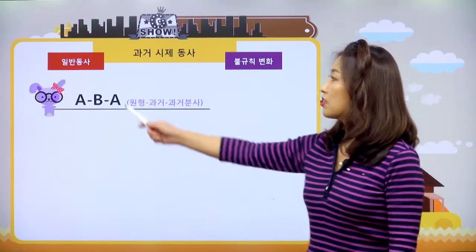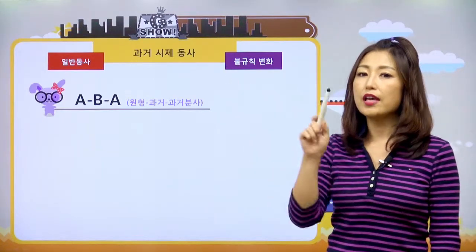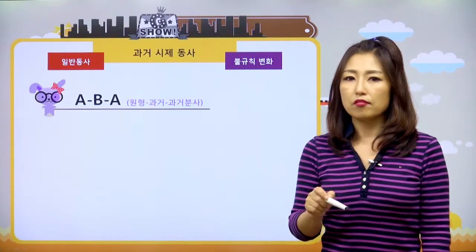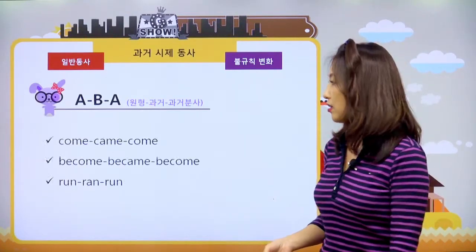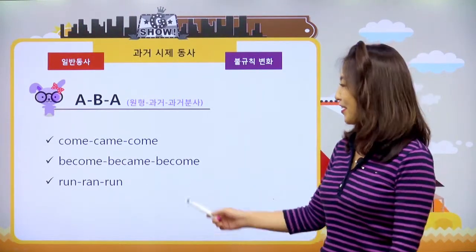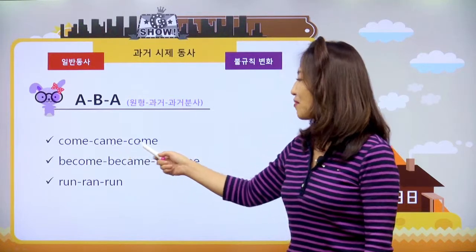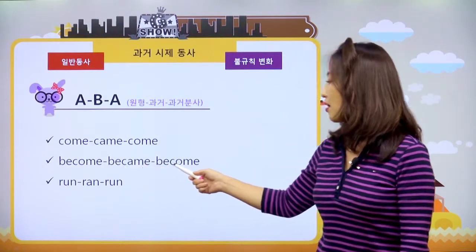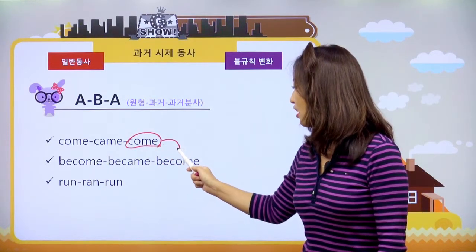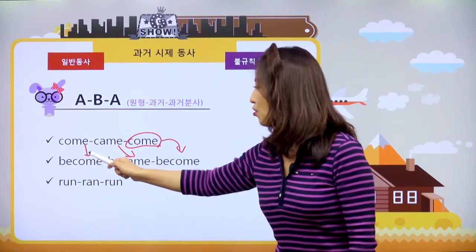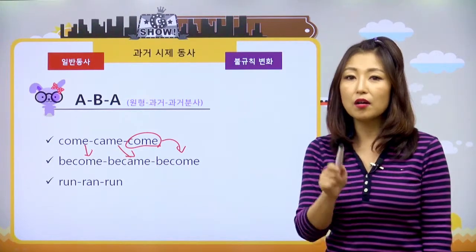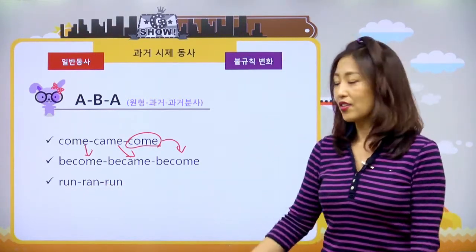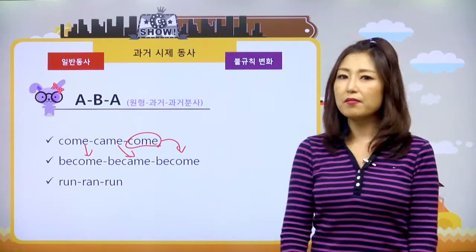다음은 ABA예요. 원형과 과거 분사가 같아요. 과거만 변신하면 되는 거예요. come - came/come, 오다. become - became/become, 뭐뭐가 되다. come 아이들이 다 이렇게 변신도 똑같은 거예요. run - ran/run, 달리다. 이렇게 세 가지 기억하면 ABA는 끝.